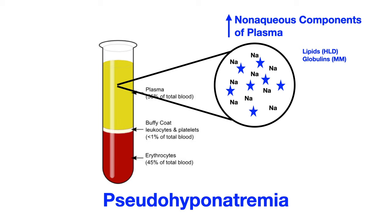So if you see hyperlipidemia or multiple myeloma on your exam, don't be surprised if the lab printout shows hyponatremia. Yes, sodium is measured as low, but it's not actually low — this is pseudo-hyponatremia.